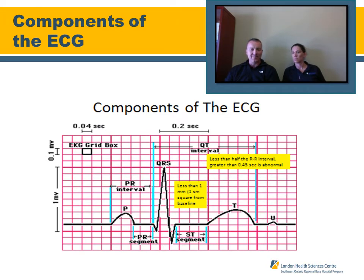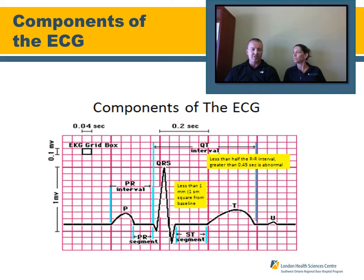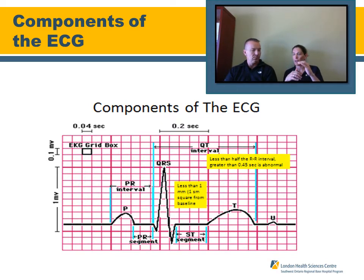Looking at the ST segment — this is where measurement is critical for STEMIs and myocardial infarctions. Based on elevation above or below the isoelectric line, specifically above for infarct, it should not be more than one millimeter above the isoelectric line. That's measured from where the QRS returns to baseline to the beginning of the T wave. In the chest leads, or precordial V leads, elevation should not exceed two millimeters above the isoelectric line, while limb leads should not exceed one millimeter.